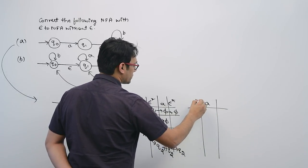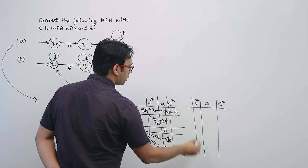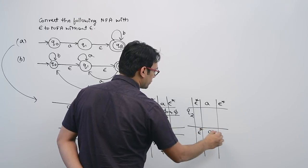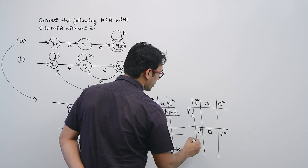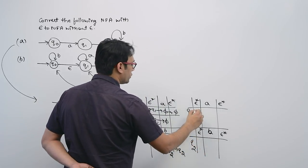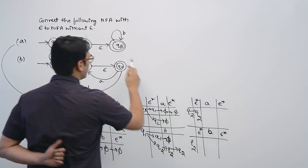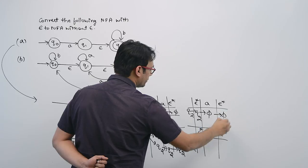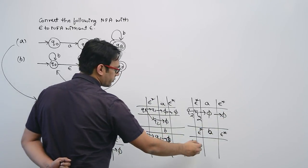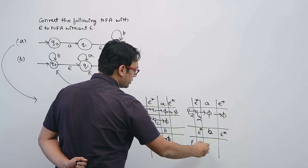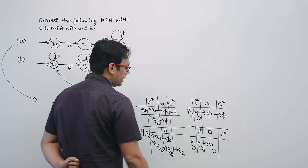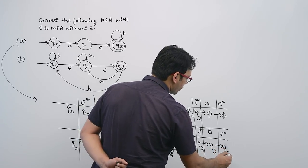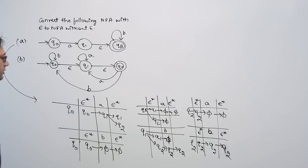For state Q2 with symbol A: epsilon closure of Q2 is Q2 itself, and seeing symbol A on Q2 you are not going anywhere, so you get phi. For symbol B: epsilon closure of Q2 is Q2; seeing symbol B you go to Q2 again, and epsilon closure of Q2 is Q2 itself.